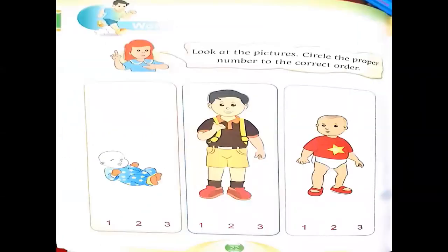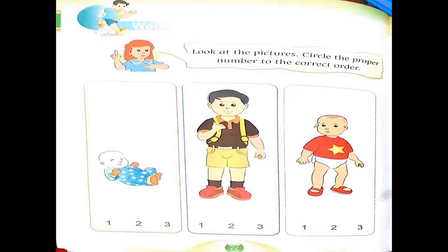Now today's class work will be page number 22. Look at the picture and circle the proper number in the correct order. Each picture has three numbers, and we have three pictures. We will circle the numbers in order. First we are going to circle number one — so let's see which one is the smallest. One picture has a baby, one has a little boy, and the third has a little kid.